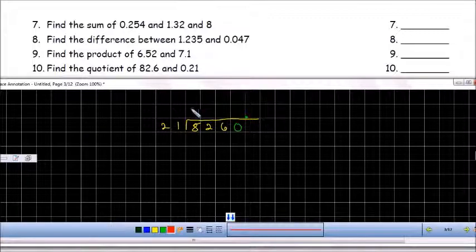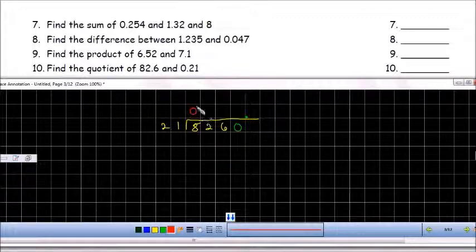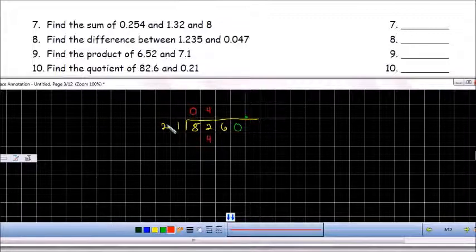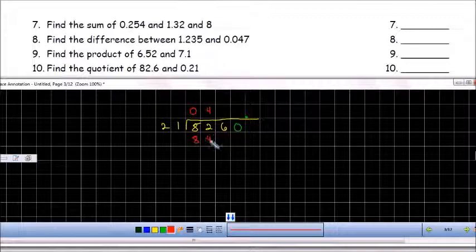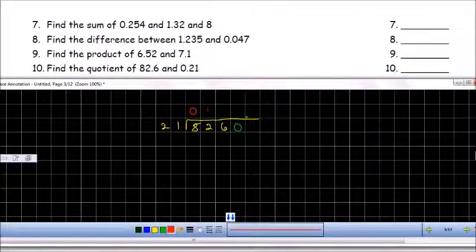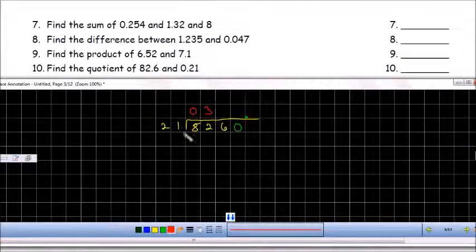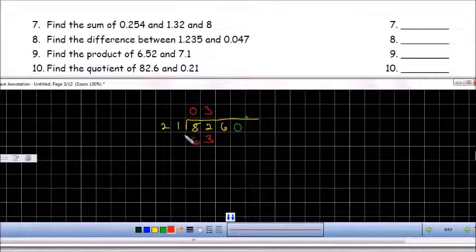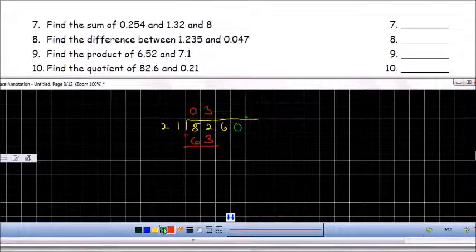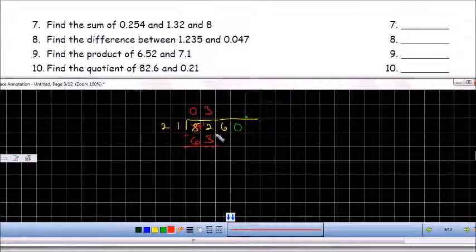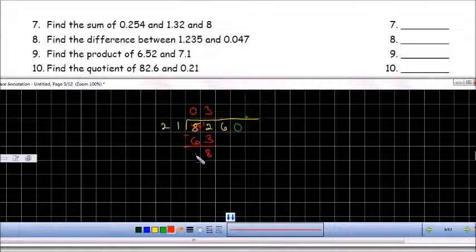So 21. Can 21 go into 8? Hopefully you said no. 21 can go into 82, though. How many times? I know that 20 goes into 80 four times, so I'll try 4. 4 times 1 is 4. 4 times 2 is 8. That's too many. 84 is bigger than 82. So it's not going to be 84. It's not going to be 4 up there. It's going to have to be 1 less. It's going to have to be 3. 3 times 1 is 3. 3 times 2 is 6. When I subtract, I'm going to have to regroup. So when I regroup, this 8 becomes a 7, and this 2 becomes a 12. 12 minus 3 is 8, and 7 minus 6 is 1. When you bring down the 6, I have 186.